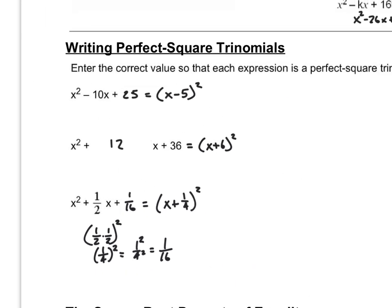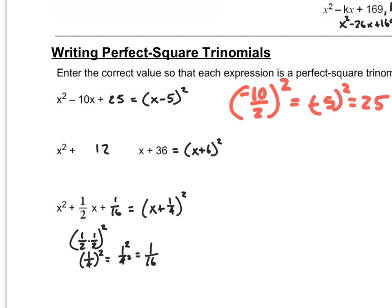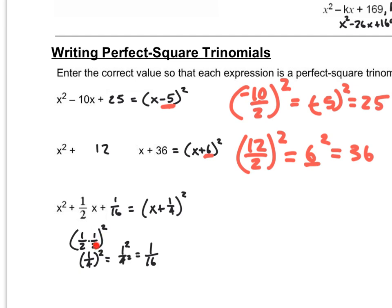In all of these, to figure this out: if I take the middle term — say negative 10 — divide that by two, and then square it, that gives me negative five quantity squared, which gives me 25. If I take 12, divide by two, and square it, that gives me six squared, which is 36. When you have a fraction as your b coefficient, you take that number, multiply it by one half, and then square it. Dividing by two and multiplying by one half is the same thing.